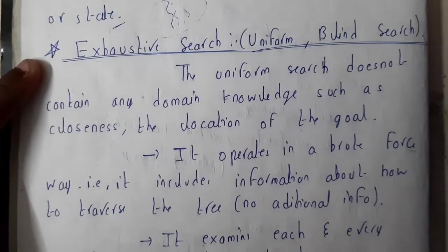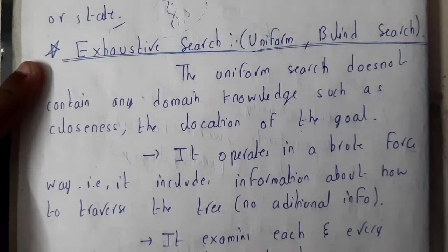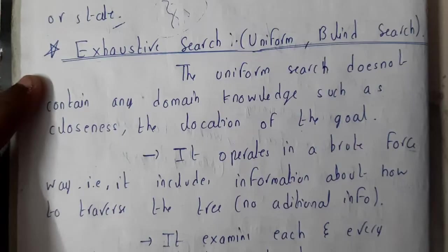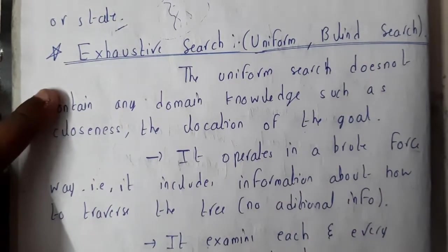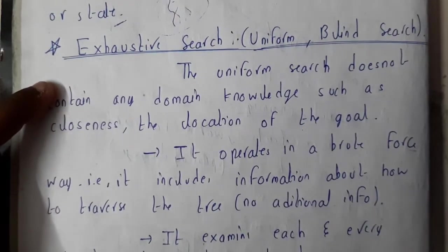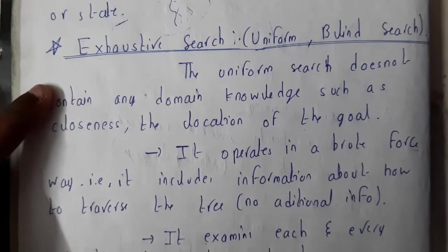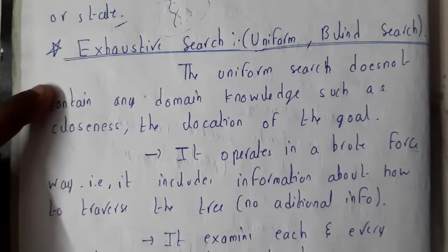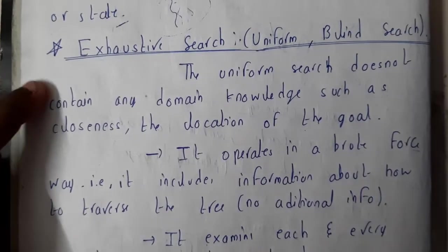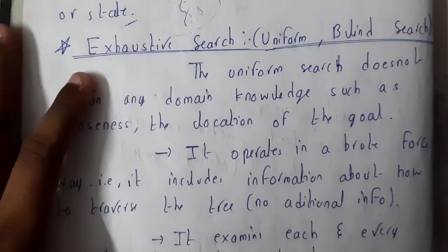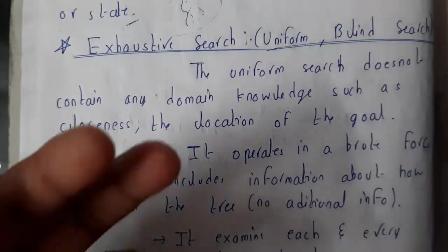Hello guys, we are back with our next lecture. In this lecture, let us go through exhaustive search. Exhaustive search techniques are also popularly called uniform or blind search. The reason why these search techniques are used really rarely is that they are not so efficient when compared with other search techniques like heuristic search, which we will discuss in further lectures. The main disadvantage is that we call it blind search because there is no information about the goal node or where it is located.